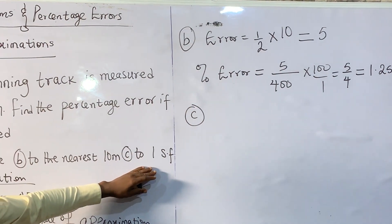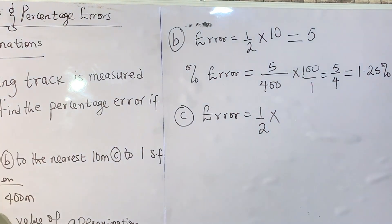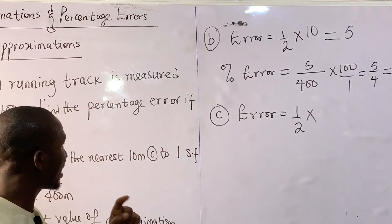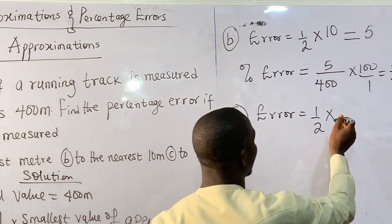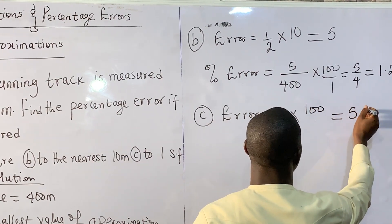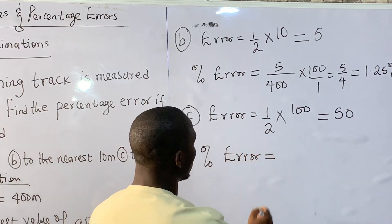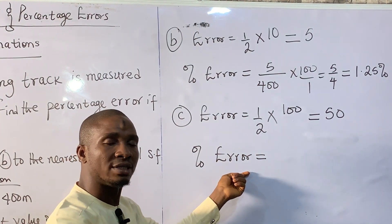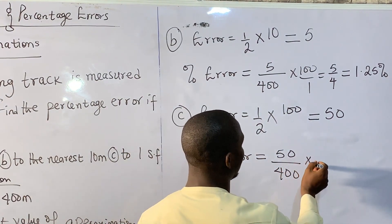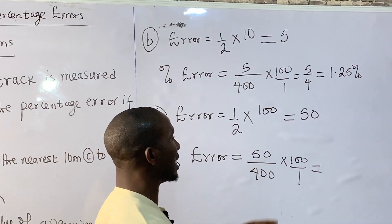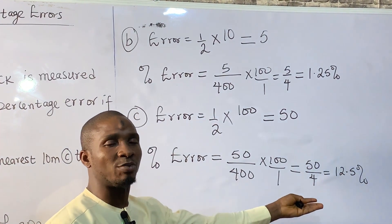For question (c), we are asked to approximate to one significant figure. The error is 1 over 2 times the smallest value. When 400 is approximated to one significant figure it remains 400, so the smallest value of approximation is 100. This gives an error of 50. The percentage error is 50 divided by 400, times 100, which equals 50 divided by 4 — giving us 12.5%.